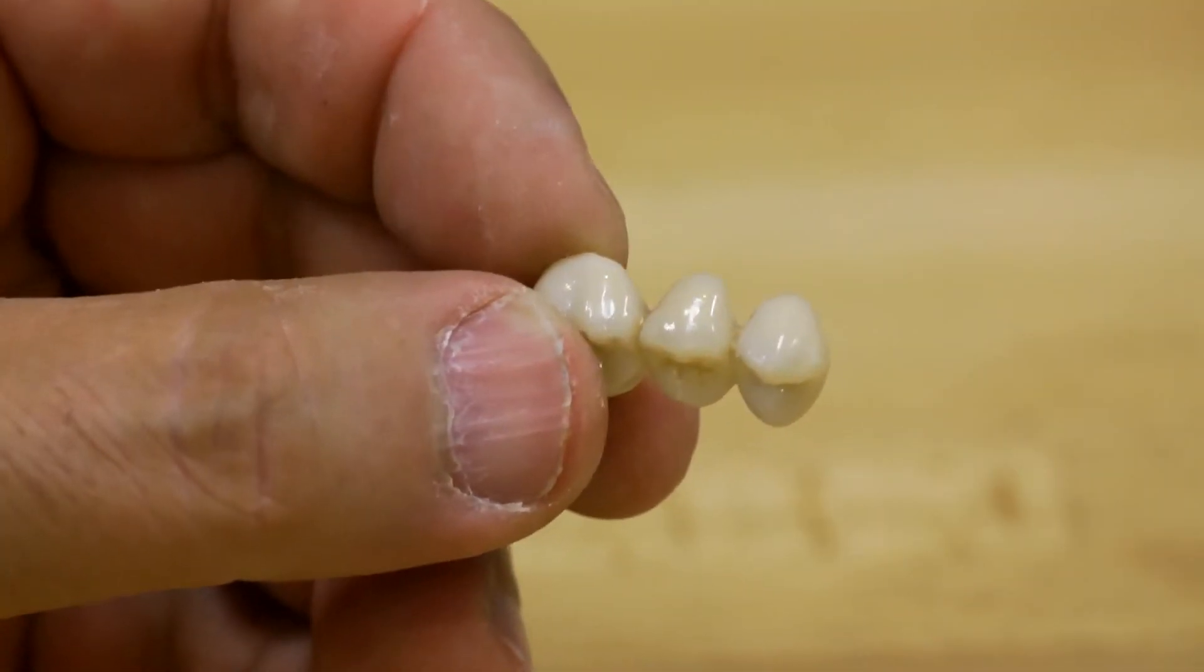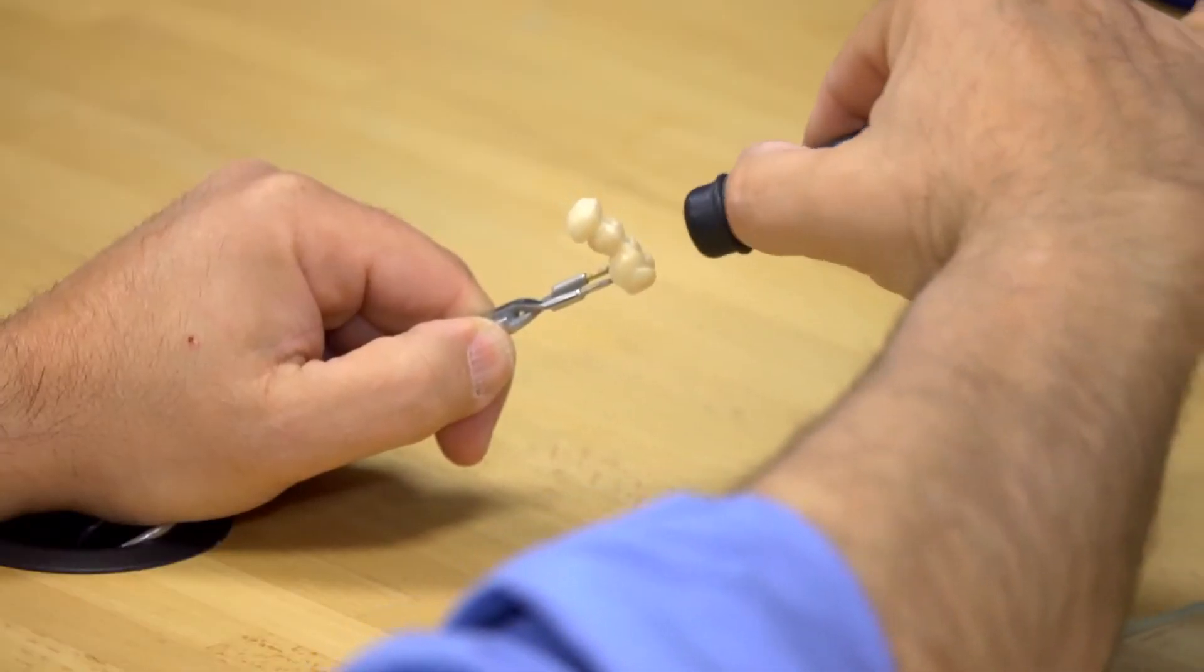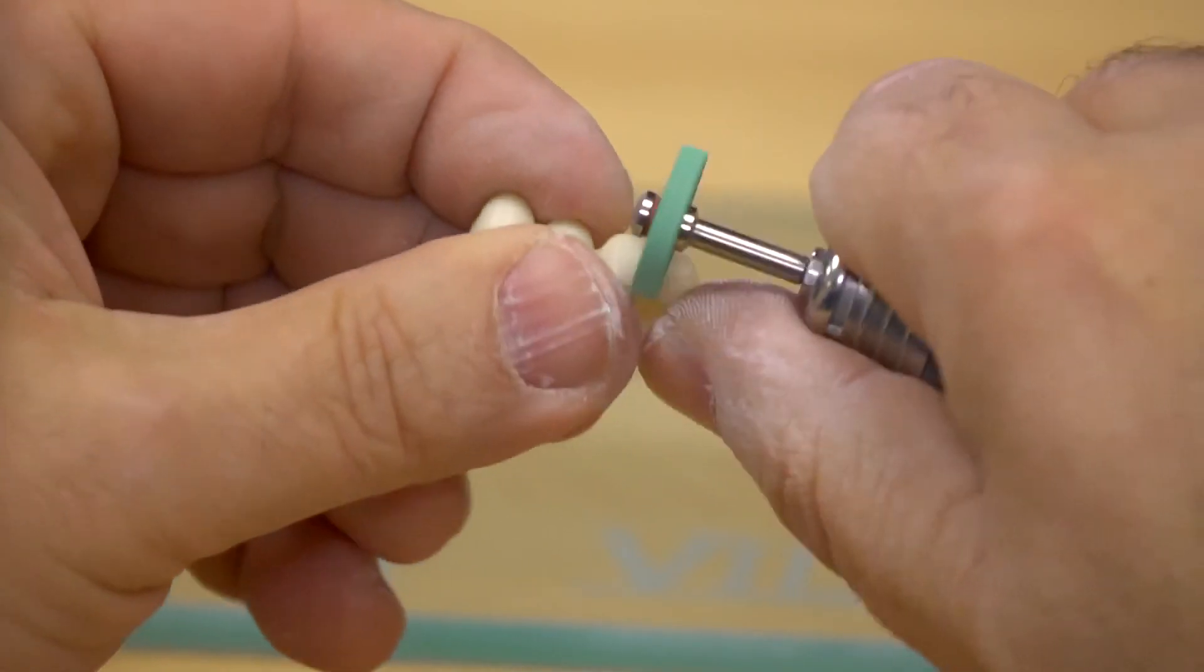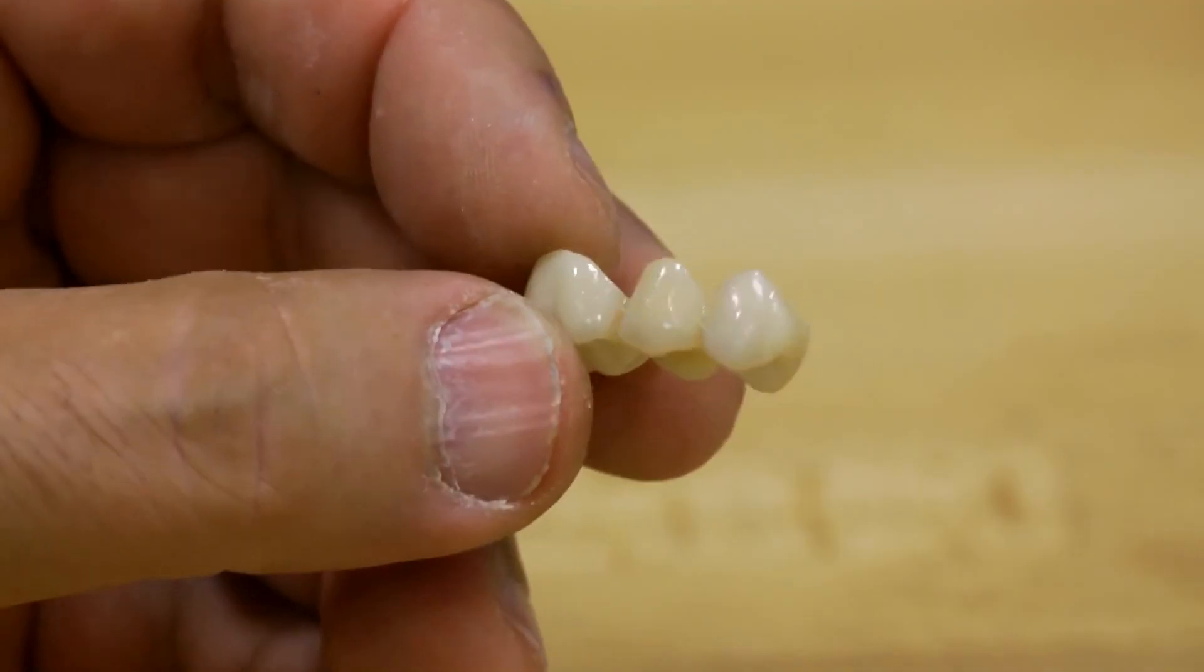The final restoration will exhibit a high gloss finish. Congratulations! You have now completed all necessary steps to design, mill, and finish an Inchorus TZI restoration using your Sirona InLab system.